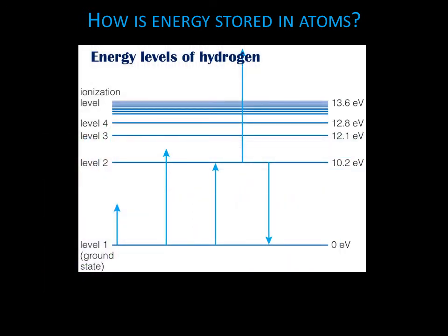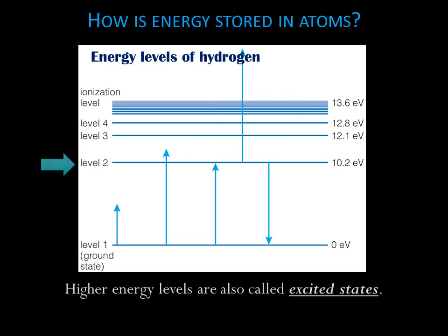The lowest possible energy level, called level 1 or the ground state, is defined as having an energy of 0 electron volts. Each of the higher energy levels is labeled with the extra energy of an electron in that level compared to an electron in the ground state.